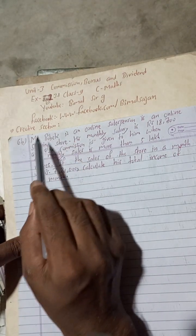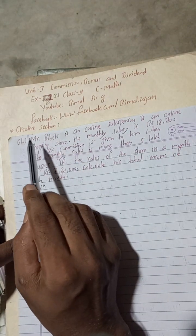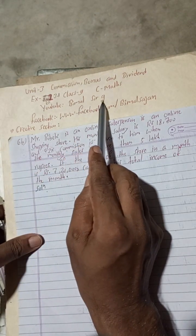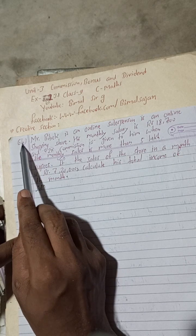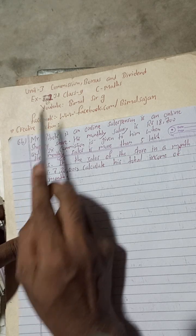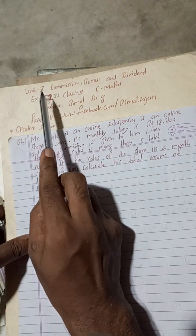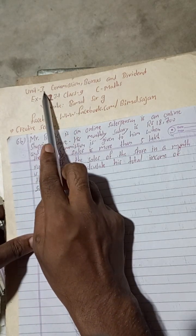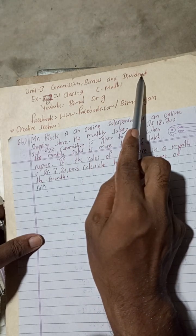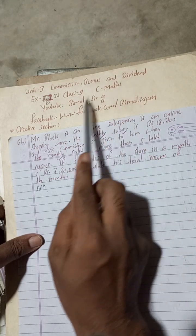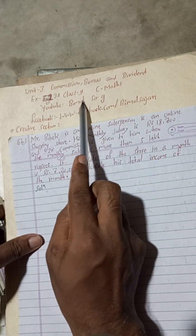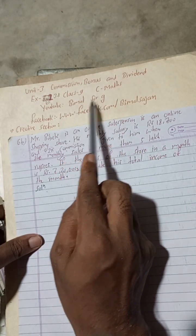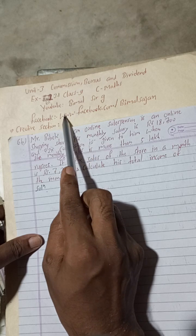Hi class 9 and 10 students, welcome back to Vimal Sarji YouTube channel. This is question number 6B of exercise 3.1, unit 3: commission, bonus and dividend.